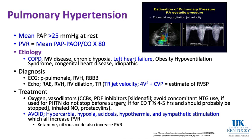Things to avoid in pulmonary hypertension are those that would increase pulmonary vascular resistance: high CO2, low oxygen, acidosis, being cold, and sympathetic stimulation with a rise in norepinephrine levels. From an anesthetic standpoint, ketamine and nitrous oxide have both been shown to increase pulmonary vascular resistance, so avoid those in general.